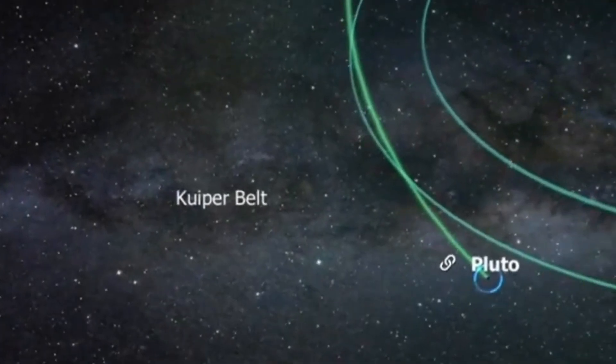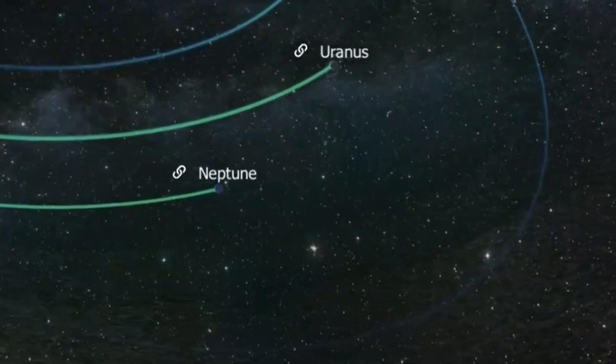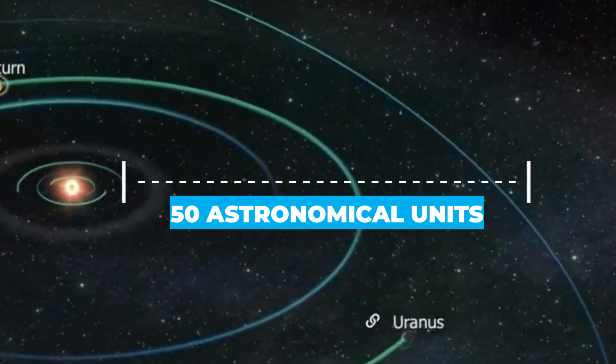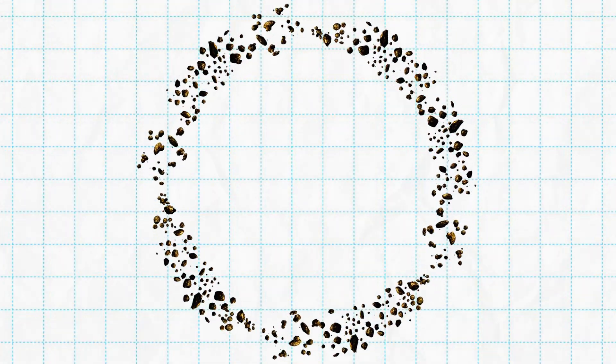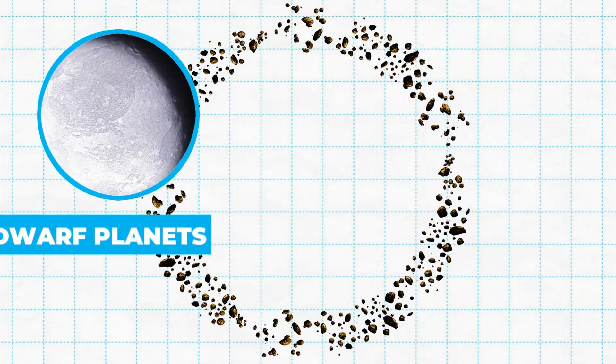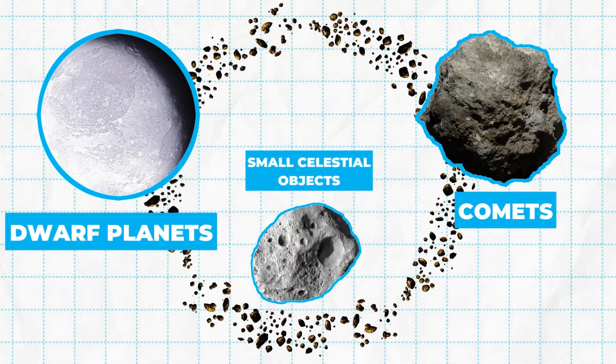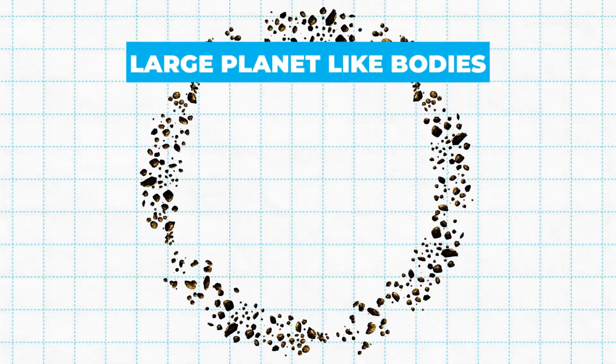The Kuiper Belt is a region of space in the outer solar system, extending from Neptune's orbit at about 30 astronomical units, AU, to approximately 50 astronomical units from the Sun. It is a donut-shaped region of icy bodies, including dwarf planets, comets, and other small celestial objects. The belt is also home to several large planet-like bodies, like Pluto.